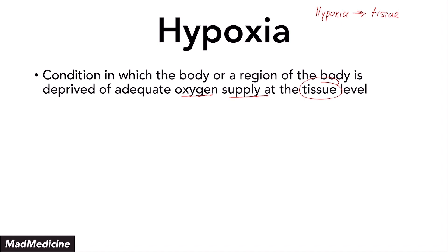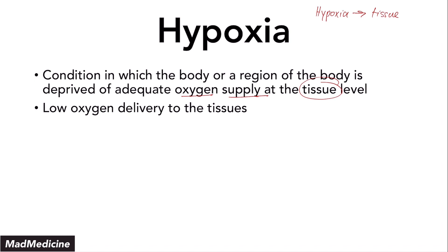There is another condition called hypoxemia, which we're going to be discussing later, that does not occur at the tissue level. So essentially, hypoxia is low oxygen delivery to the tissues, and our tissues — our whole body — are very dependent on oxygen.